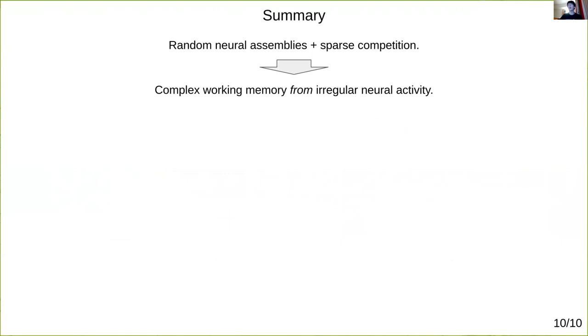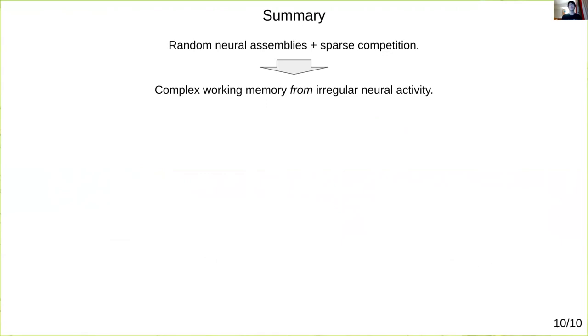To summarize, I've shown you a network model that leads to complex working memory derived not in spite of but very much from irregular neural activity, and which we can understand in large part analytically.